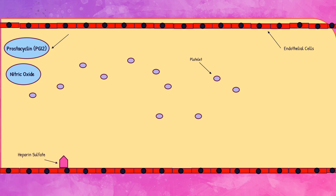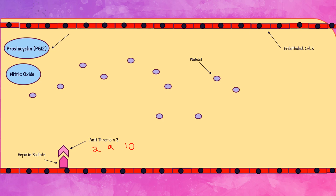The second way is a glycosaminoglycan called heparin sulfate, which binds to a protein called antithrombin 3. Antithrombin 3 is just hanging out in the bloodstream. This is kind of like a lock-and-key interaction. When antithrombin 3 binds with heparin sulfate, it inactivates coagulation factors 2, 9, and 10 that are circulating in the bloodstream. Because those clotting factors are inactivated, nothing is clotting. That's the second mechanism.